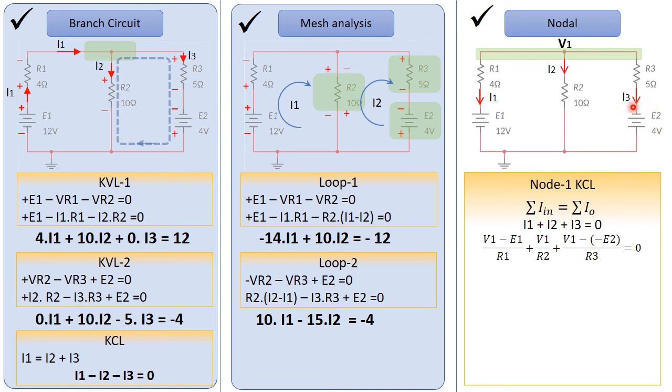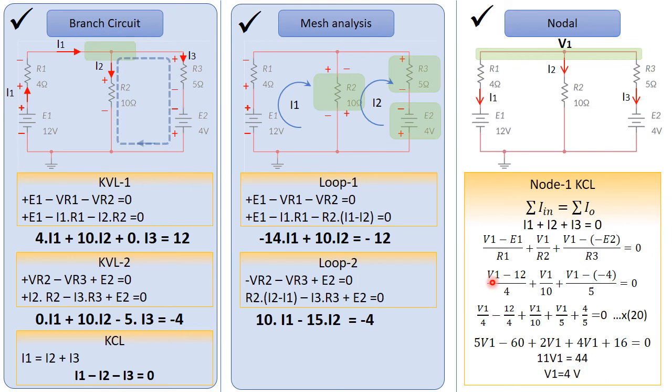And I3 is V1 minus, here this voltage E2 is flipped over, so it will be V1 minus minus E2. So we have V1 minus 12 over 4, V1 over 10, V1 minus minus 4 over 5, and we will end up having one equation with one unknown, and we can find out that V1 is 4 volts.